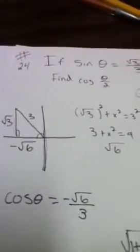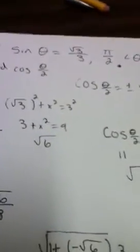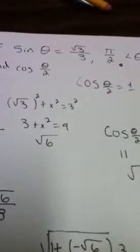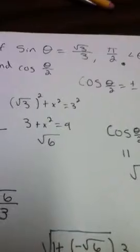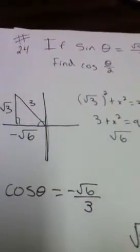First, you have to find the third side of the triangle using the Pythagorean Theorem. Square root 3 squared plus x squared equals 3 squared, so 3 plus x squared equals 9, which gives you square root of 6. Since it's in the second quadrant, it is negative.